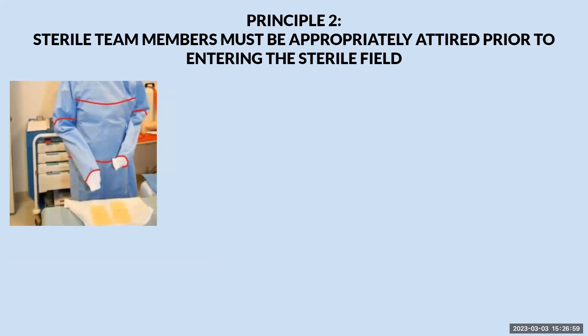Principle two: sterile team members must be appropriately attired prior to entering the sterile field. The surgical gown is considered sterile in the front only, two inches below the neckline — so about two inches below the neckline to table level, which is what that red line indicates. The upper chest area on the front of the gown is considered non-sterile because it cannot be directly viewed by the wearer, and because your chin can hit it. So we should not touch that area because it should be considered unsterile.